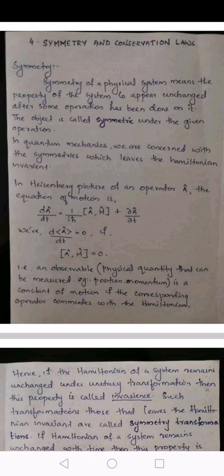That is, it means that an observable—what is an observable? It is a physical quantity that can be measured, for example, position or momentum. From this equation, we can conclude that an observable is a constant of motion if the corresponding operator commutes with the Hamiltonian.